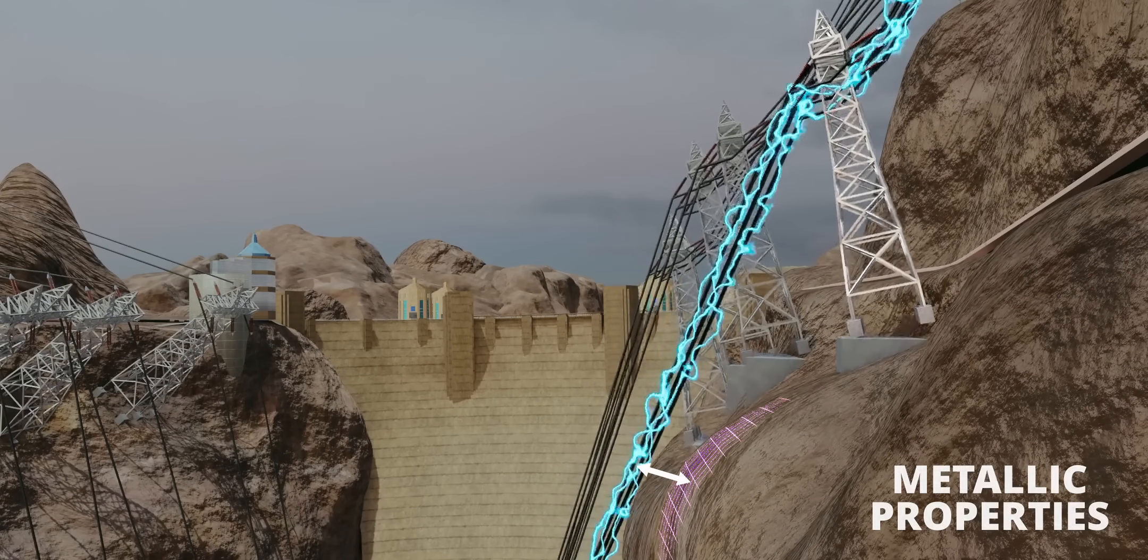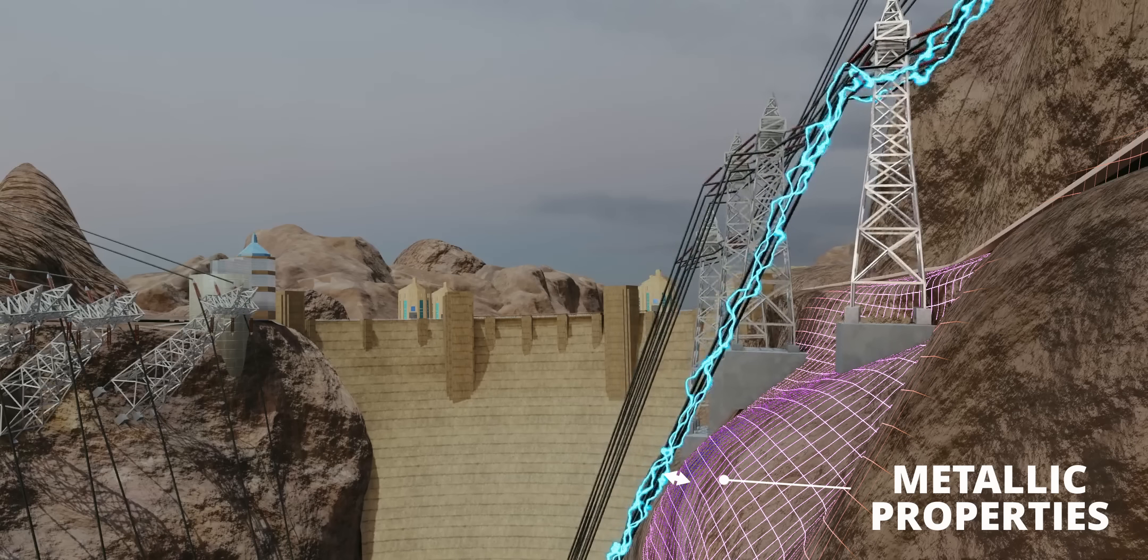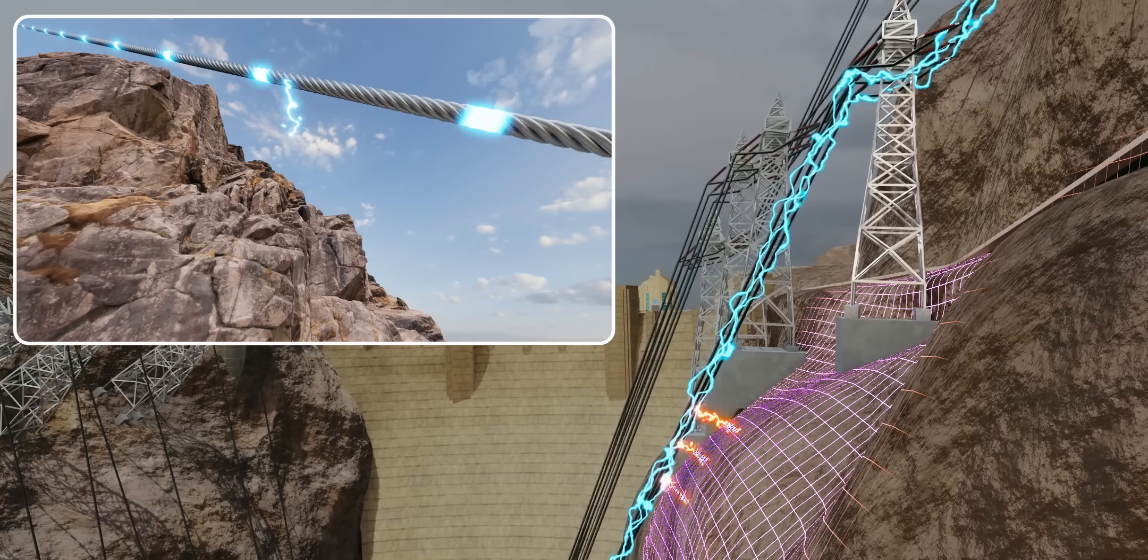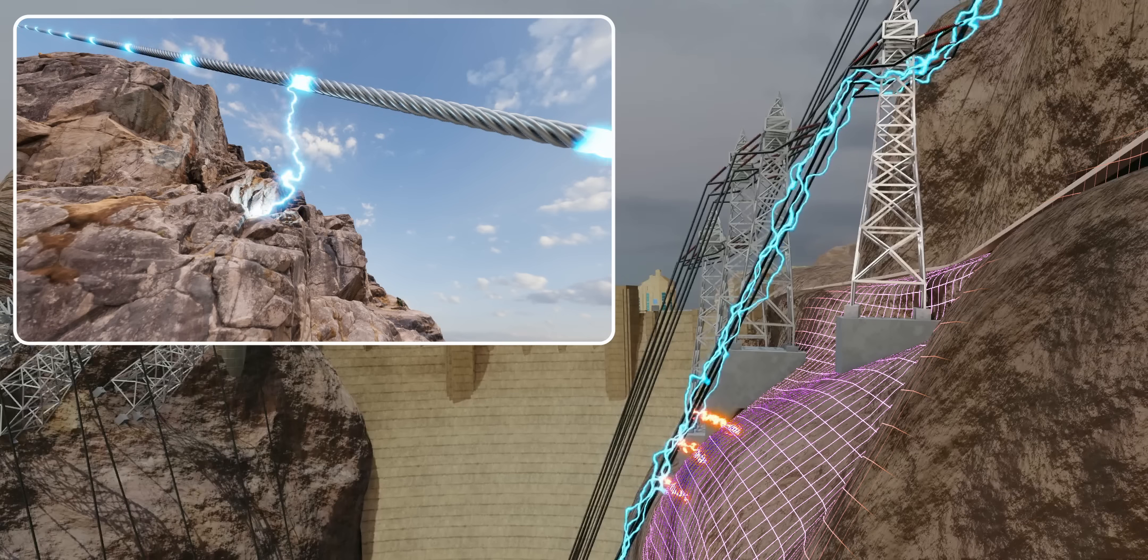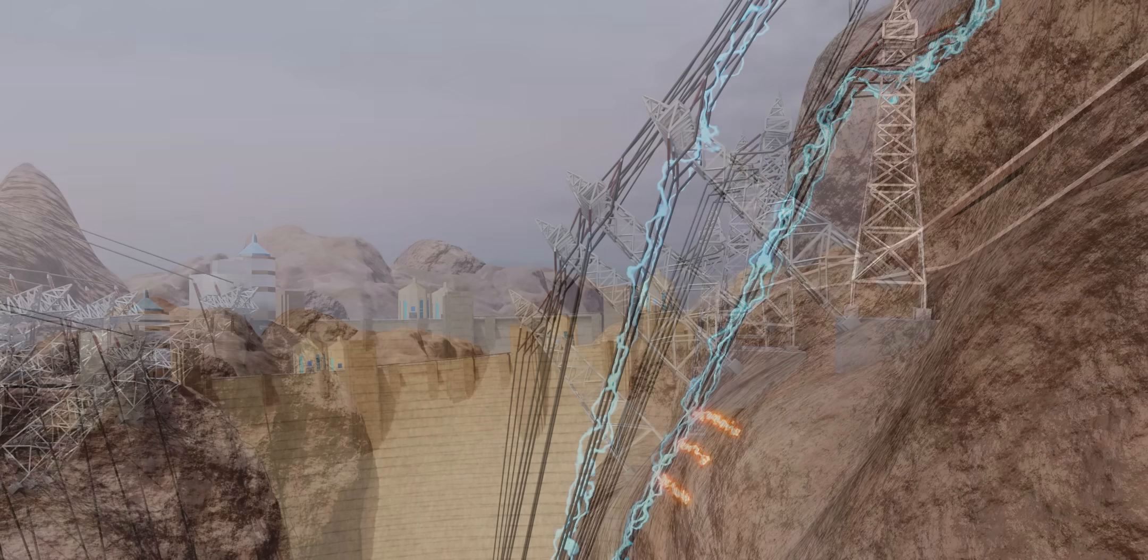The canyon walls have metallic properties, and such a high-voltage line close to the rock would lead to electrical arcing. This is why the engineers chose to erect the power transmission towers inclined.